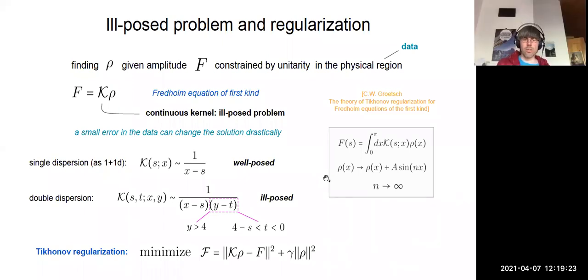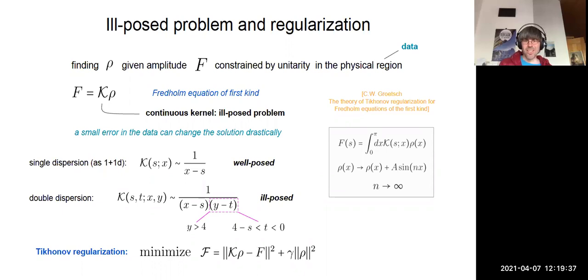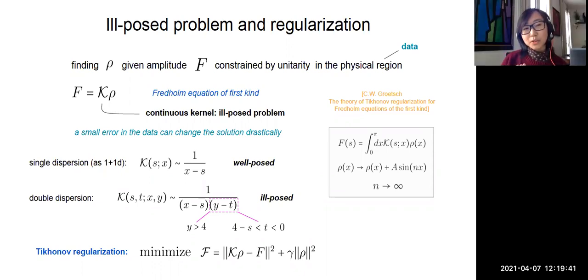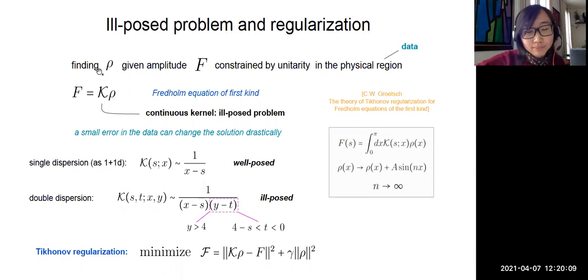Question: Is this ill-posedness a matter of practice or principle — do you really think there are two different spectral densities that give the same f? It's both in practice and in principle. The kernel doesn't have any zero mode — if you know the amplitude precisely you can recover ρ. But the problem is that we have the amplitude constrained in a certain region, so it's effectively ill-posed in practice.